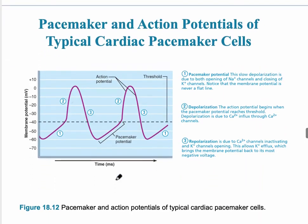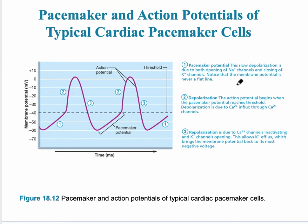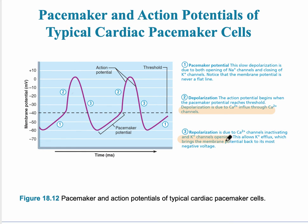The pacemaker potential involves a slow depolarization due to opening of sodium channels and closing of potassium channels. The resting membrane potential is a little higher — about negative 60 instead of negative 70 to negative 90 — making it much easier to reach threshold. Depolarization begins when the pacemaker potential reaches threshold and is due to an influx of calcium. Repolarization occurs as potassium leaves the cell — calcium in, potassium out.